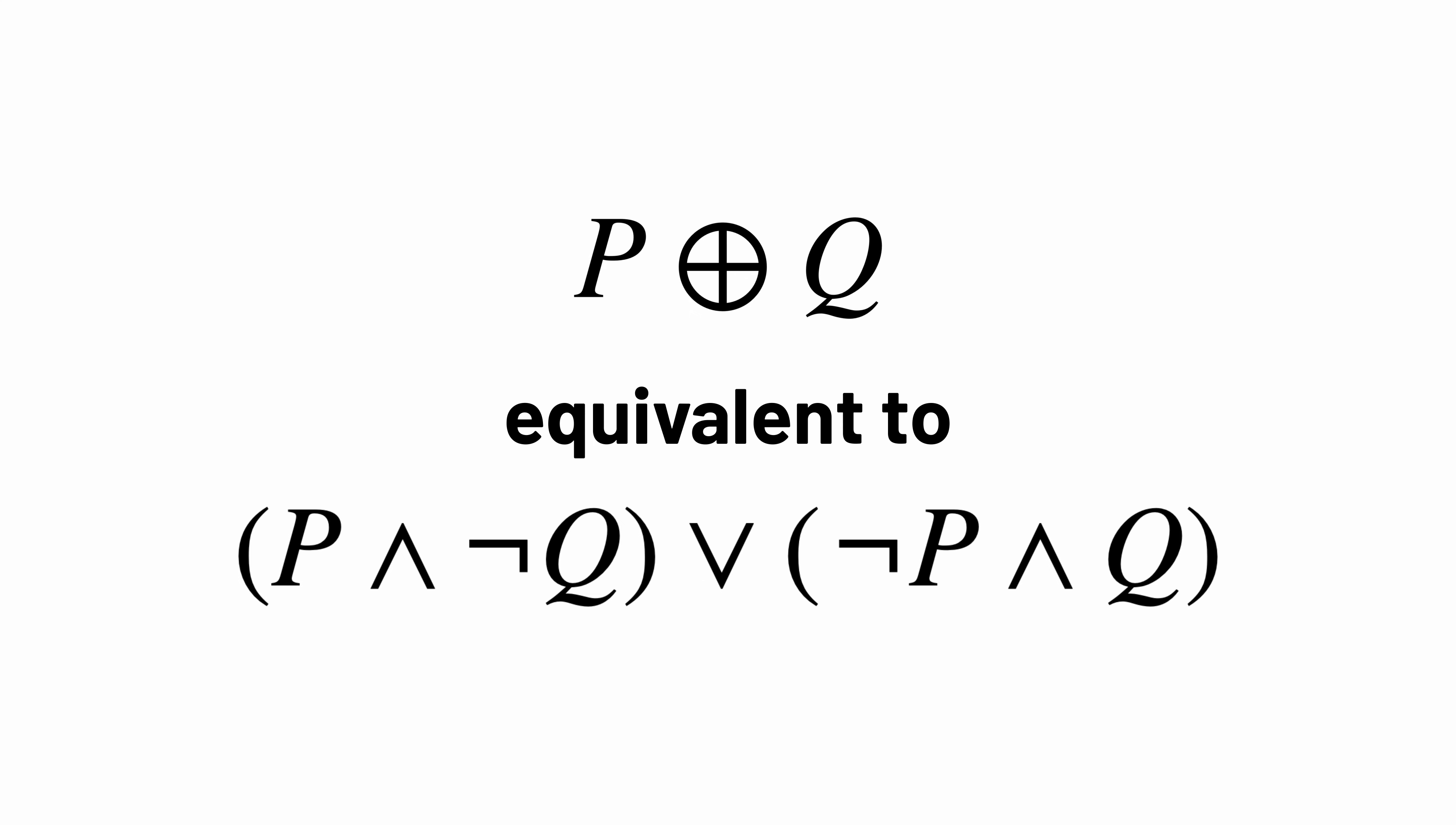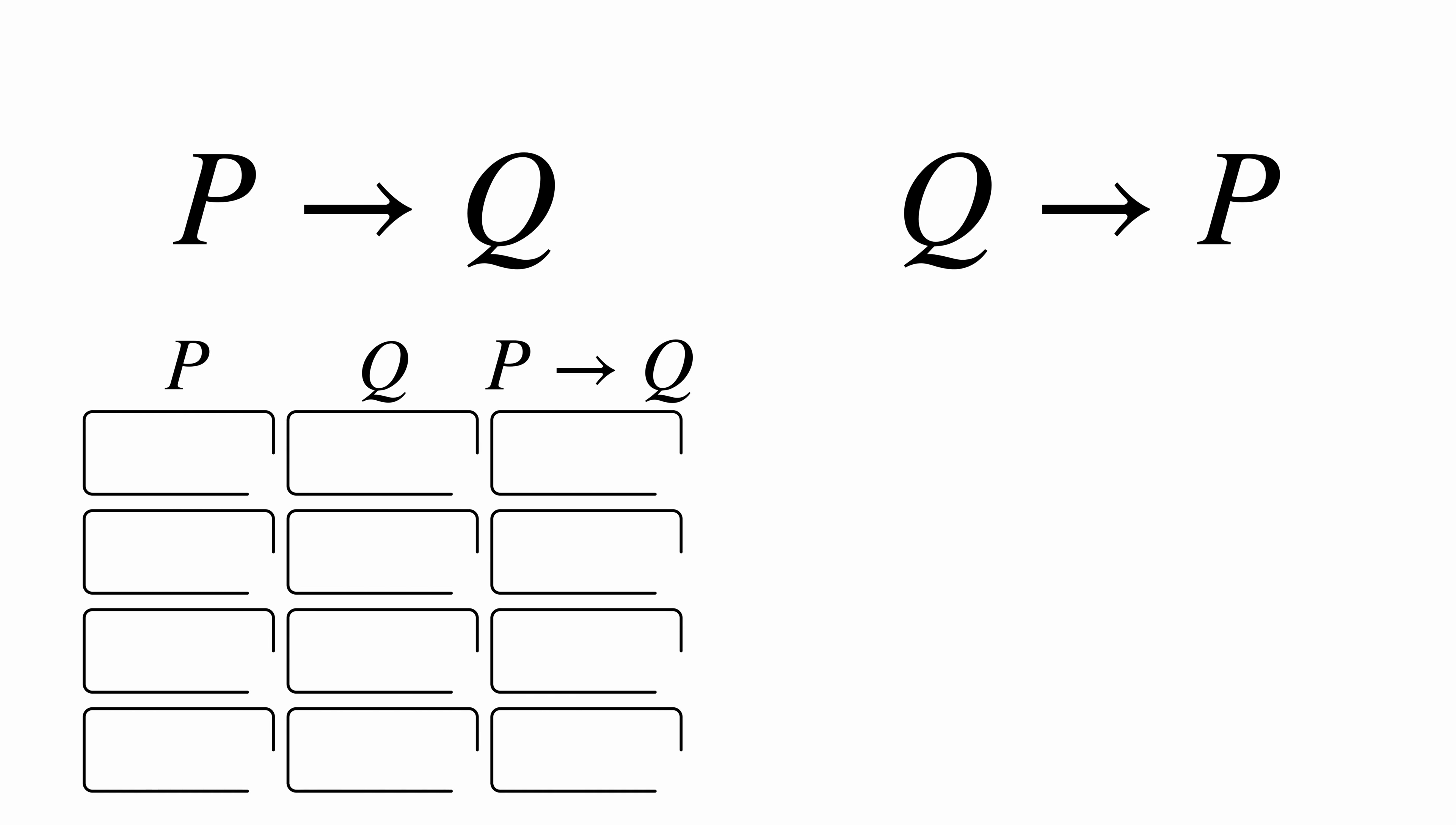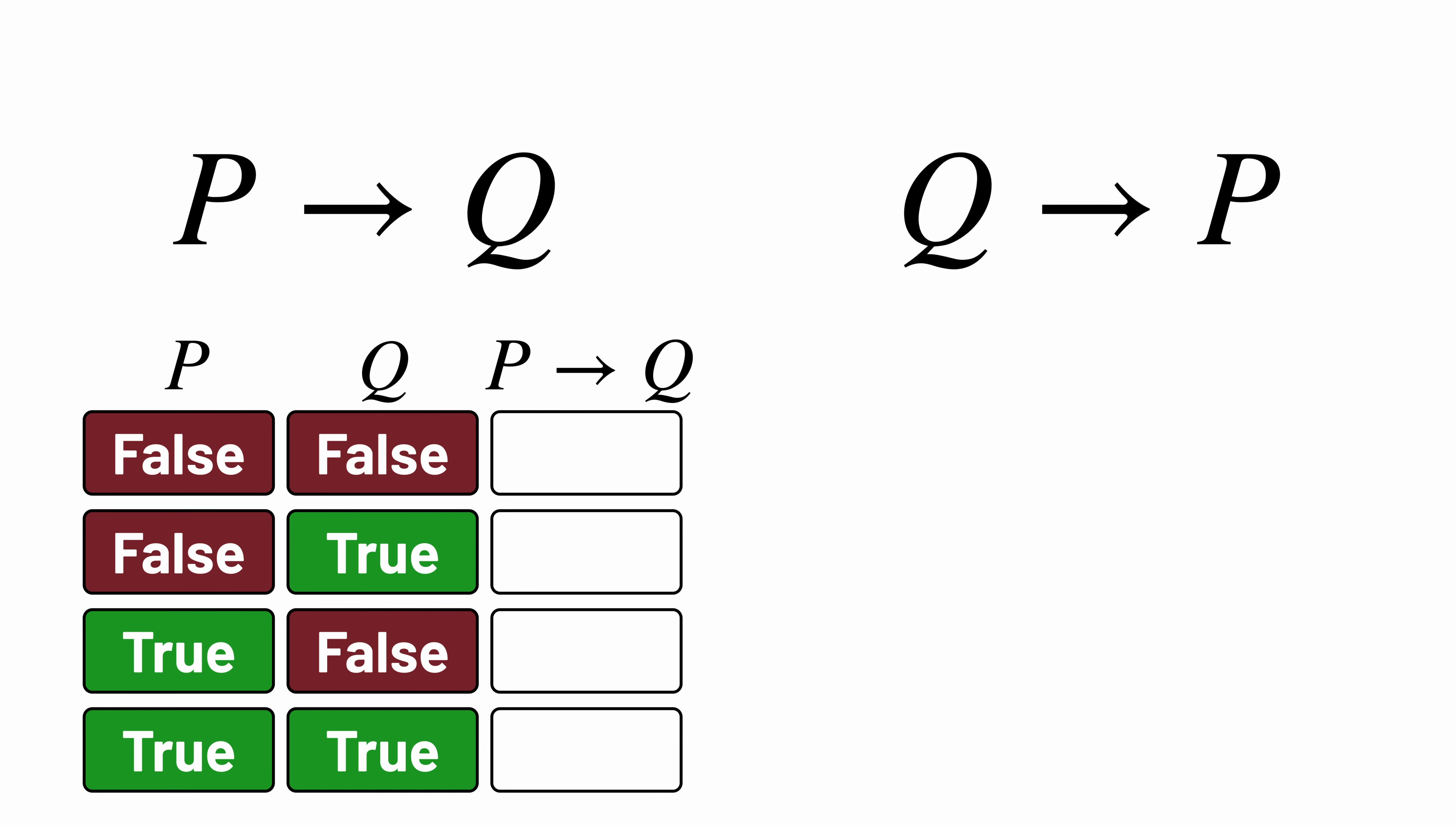Here's an exercise we can try together. Is P implies Q equivalent to Q implies P? We can answer that by drawing out the truth tables. P implies Q means that if P is true, then Q is true. So if P is true and Q is false, then the whole formula is false. And if P is false, we know the formula is true no matter what.